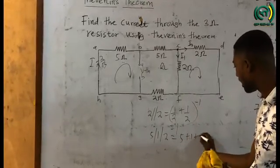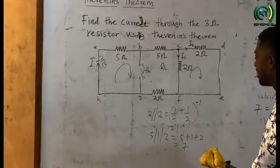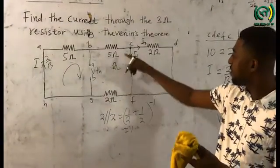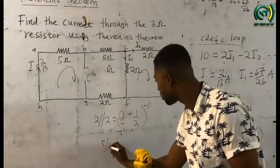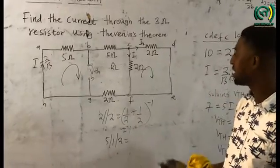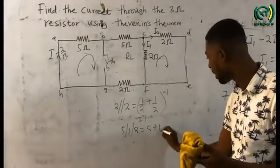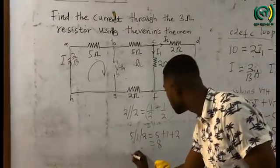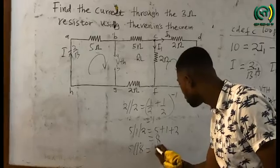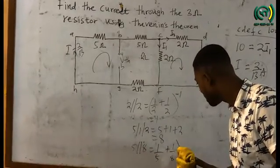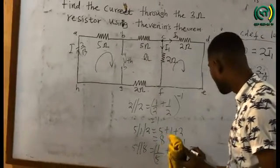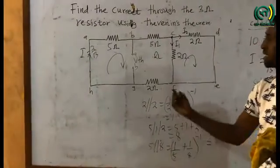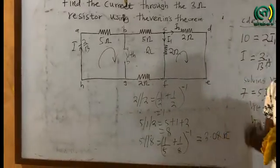So we have 5 ohm in series with 1 ohm in series with 2 ohm. Adding series resistors: 5 + 1 + 2 = 8 ohms. This 8-ohm combination is in parallel with the 5-ohm resistor. So 5 parallel with 8 equals (1/5 + 1/8)^-1, which gives 3.08 ohms. Therefore RTH, the Thevenin's equivalent resistance, is 3.08 ohms.